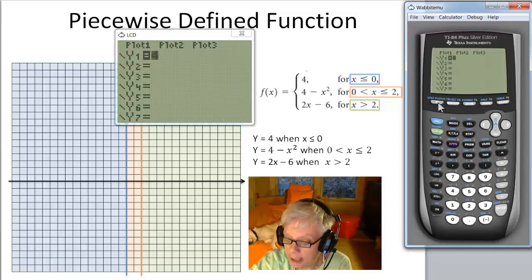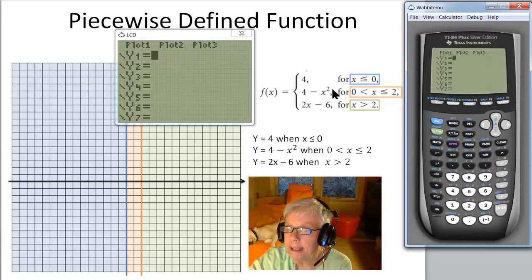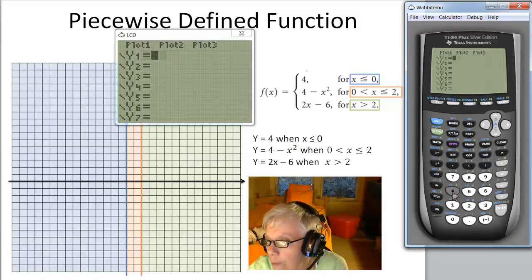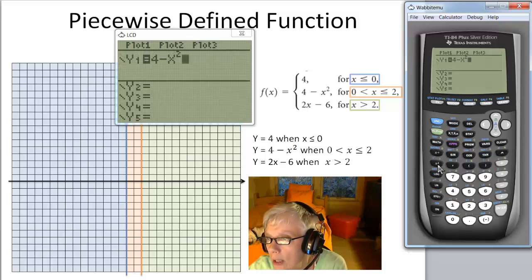So I'm going to get rid of that now, and I'm going to graph 4 minus x squared. 4 minus x squared. And now I'm going to graph that.